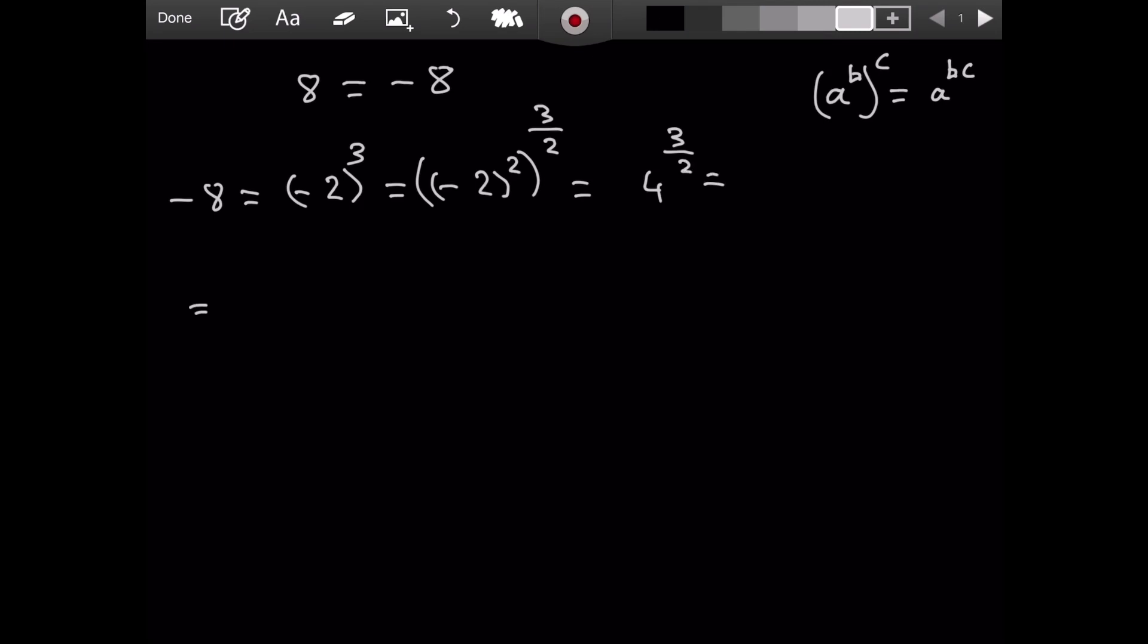Here we know that 4 is just 2 raised to the power of 2, and then we raise it to the power of 3 over 2. So if we use this property that I just mentioned, this is going to be 2 raised to the power of 3 over 2 times 2, which is 2 raised to the power of 3. That is just 2 times 2 times 2, which is 8.